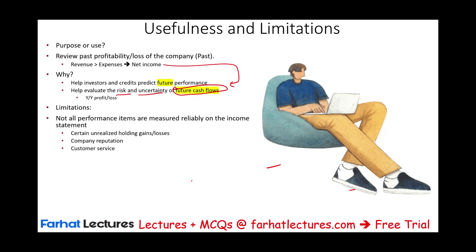Another limitation is that different accounting methods are used by different companies. For example, some companies use FIFO for inventory while others use LIFO. To compare their performance, you must make adjustments. Similarly, one company might use the percentage of completion method for revenue recognition while another uses the completed contract method. Different accounting methods generate different amounts of revenues and expenses, so two companies could show the same figures but actually be different, or vice versa.